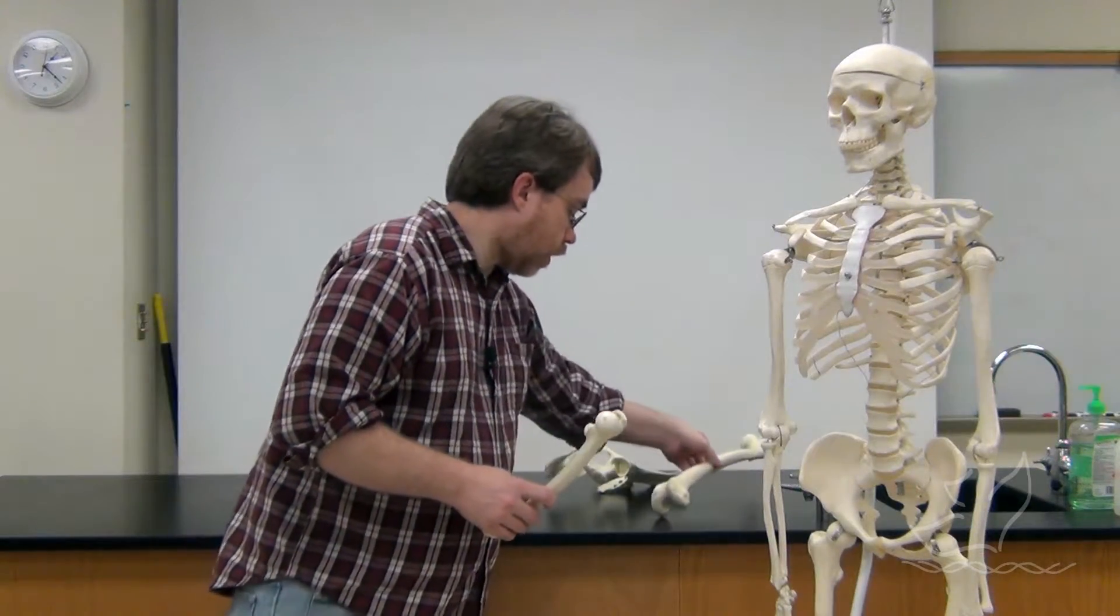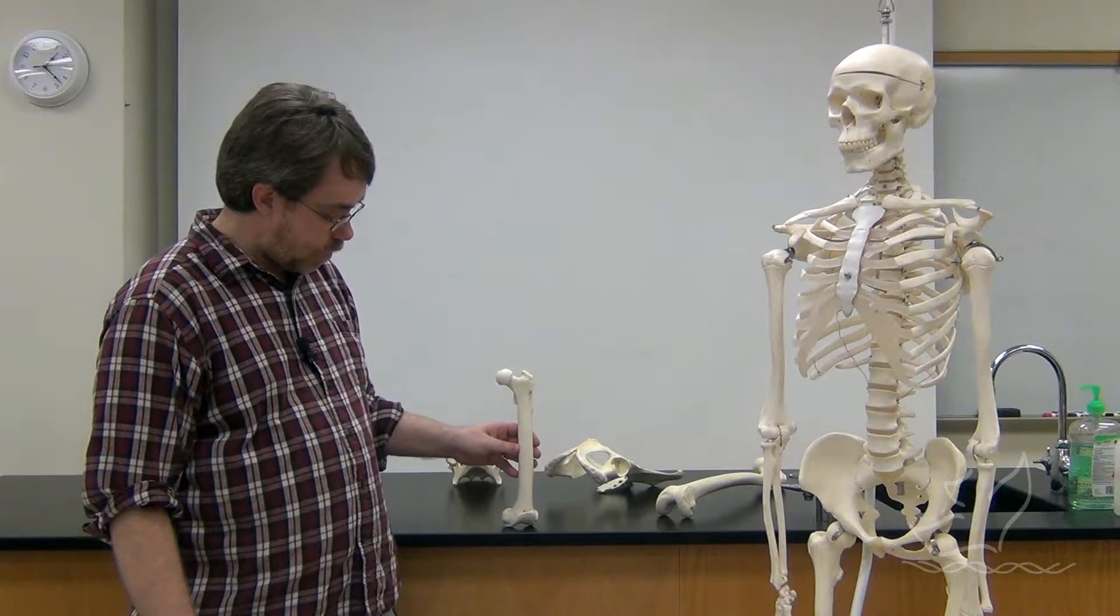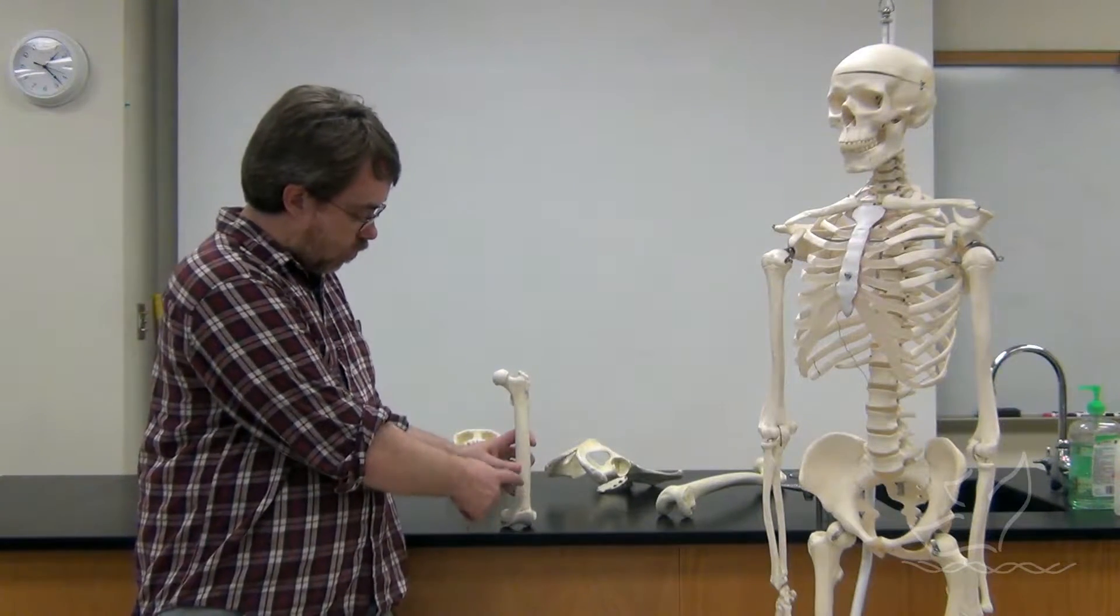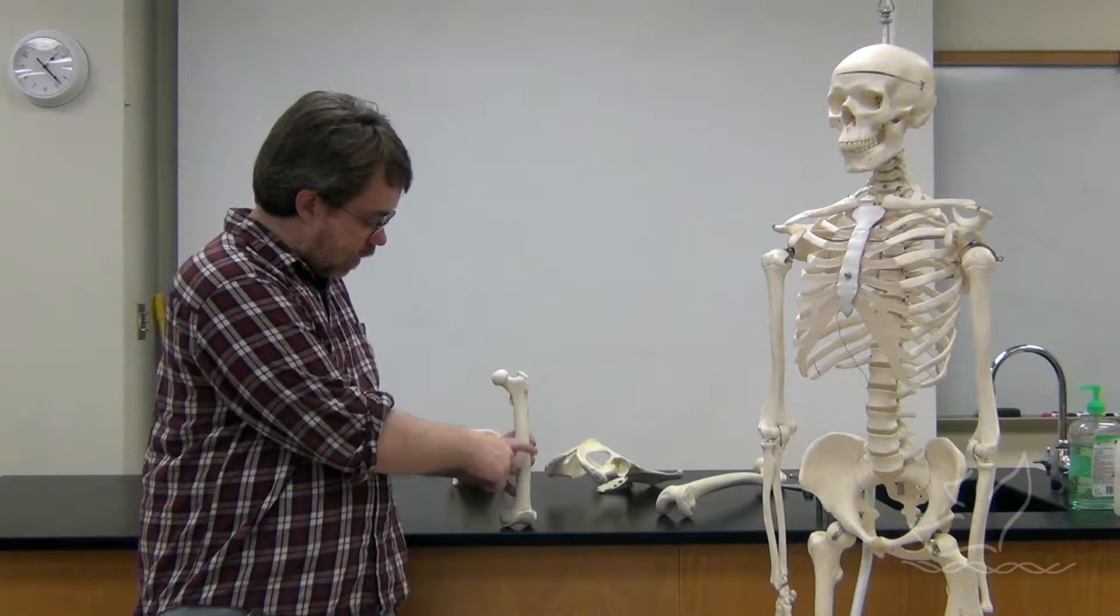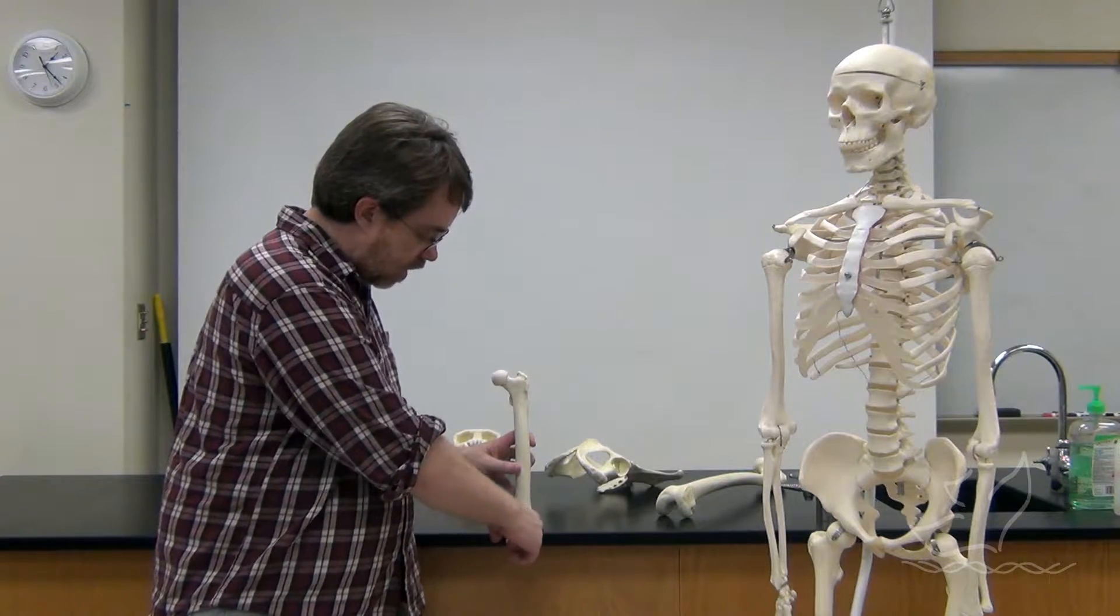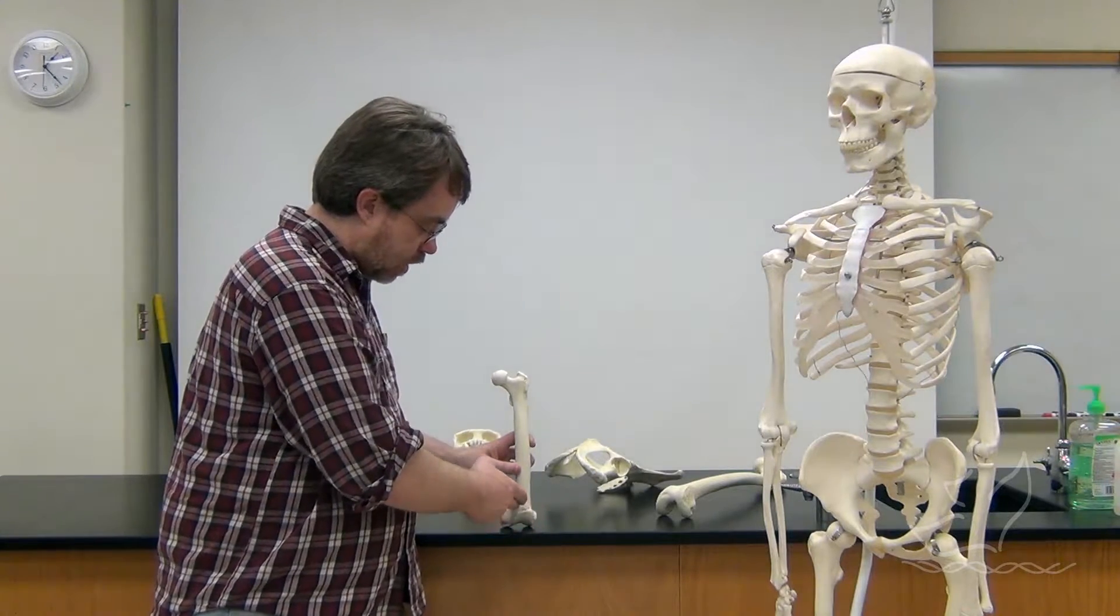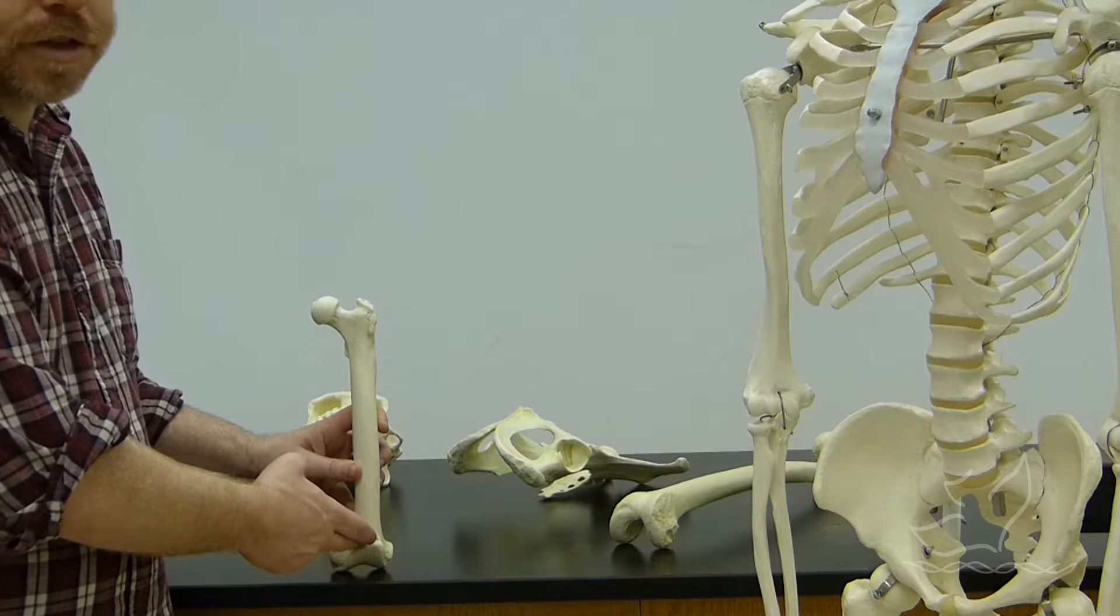But there is one thing that's really important about the thigh bones that really sets apart chimpanzees. If I take this thigh bone and I look at this knee joint right here and set that down on a flat surface, you can see that the bone comes straight up off that flat surface, indicating that the knee here is basically perpendicular. The angle of the knee joint is perpendicular to the shaft of the thigh bone.